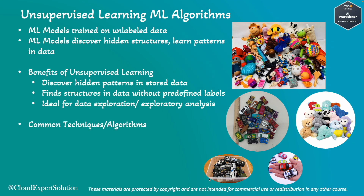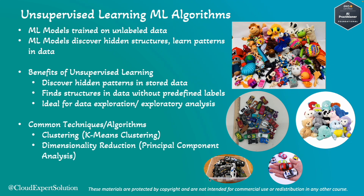Let's review some common techniques and algorithms for unsupervised learning. The first is clustering, with the algorithm K-means clustering. The second is dimensionality reduction, with the algorithm Principal Component Analysis, or PCA — useful when you want to reduce the volume of a dataset or make it smaller. The third is anomaly detection, with the algorithm Isolation Forest. Amazon also has their own proprietary algorithm called Random Cut Forest. We will deep dive into each of these techniques in the following slides.